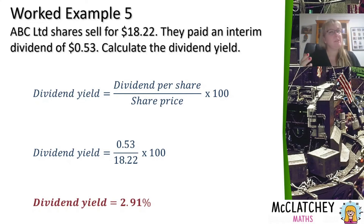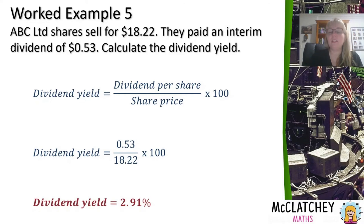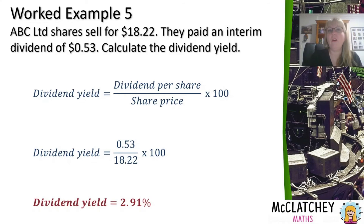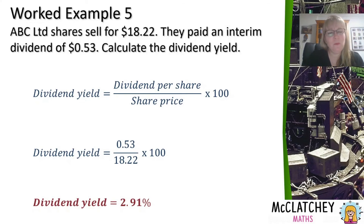You might wonder whether 2.91% is good or bad — the answer is it's all relative. Usually you make this decision in comparison to other dividends. The bigger the dividend yield, the better, so if choosing between two you'd go for the higher yield. A note of caution: there are many different measures investors use to analyze shares, and very few investors would analyze just one in isolation — you would never invest based on this measurement alone.